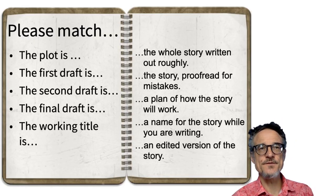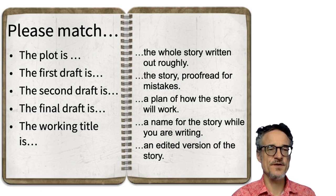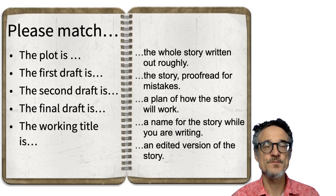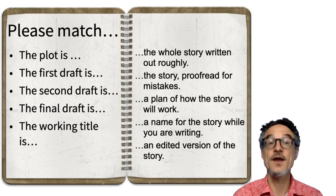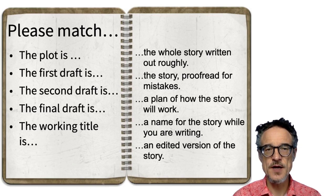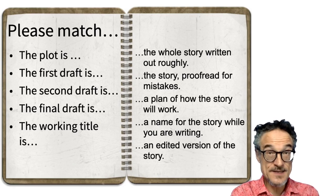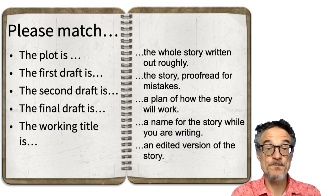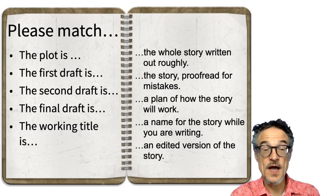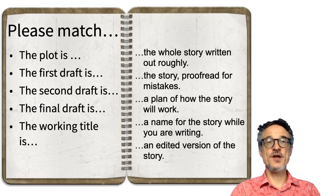These are different parts of the writing process — different things that you produce: the plot, the first draft, the second draft, the final draft, and the working title. I'd like you to think about what each of these might be. One is the whole story written out roughly. One is the story proofread for mistakes. One is a plan of how the story will work. One is a name for the story while you're writing. And the other is an edited version of the story. The working title is the name.